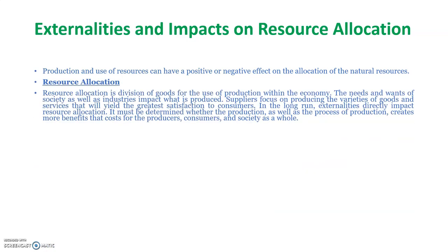Resource allocation is the division of goods for the use of production within the economy. The needs and wants of society as well as industries impact what is produced. Suppliers focus on producing goods and services that will yield the greatest satisfaction to the consumer in the long run. Externalities directly impact resource allocation — it must be determined whether production and the process of production creates more benefits than costs for producers, consumers, and society as a whole.